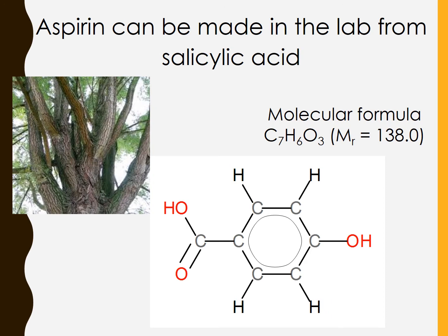Aspirin can be made from this compound here, called salicylic acid, C7H6O3 with an MR of 138.0. This can be derived from the bark of willow trees, which helps explain why historically chewing on the bark of willow trees was used to treat toothache before such commercial compounds were available.